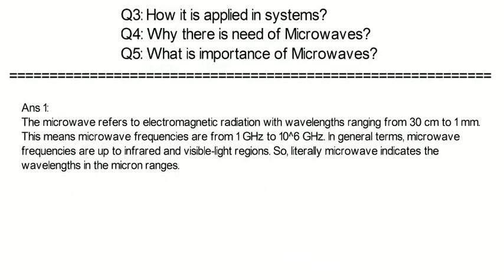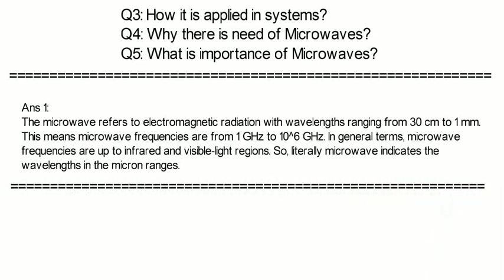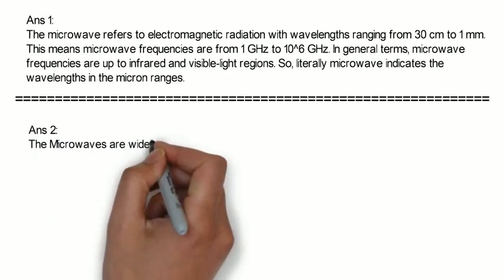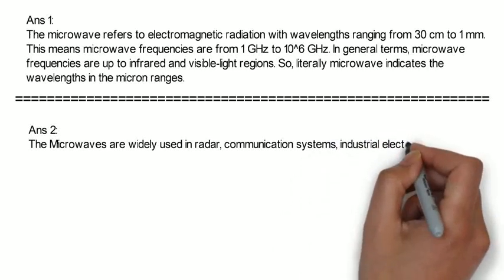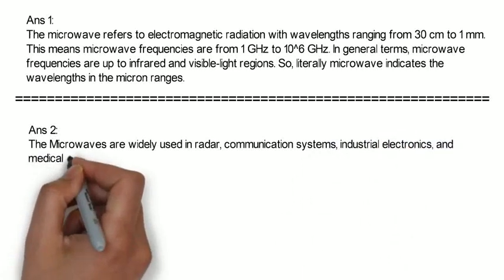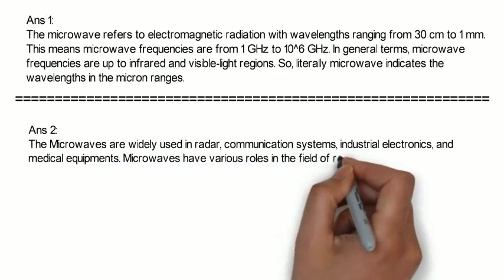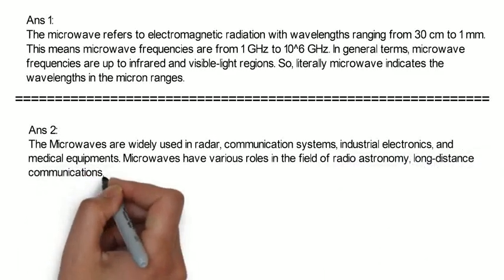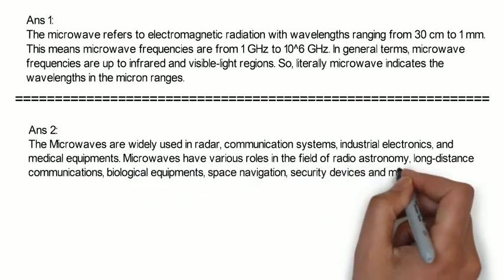Now we will study second question, what are its roles? The Microwaves are widely used in radar communication systems, industrial electronics and medical equipments. Microwaves have various roles in the field of radio astronomy, long distance communication, biological equipments, space navigation, security devices and missile electronics systems.